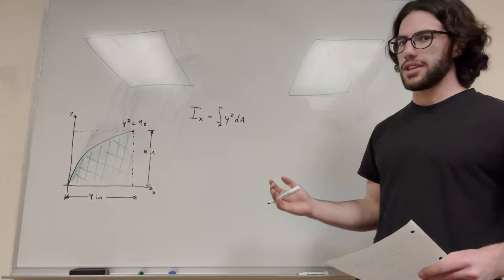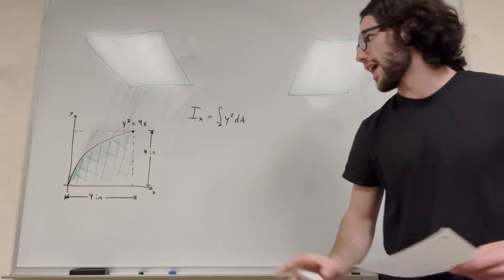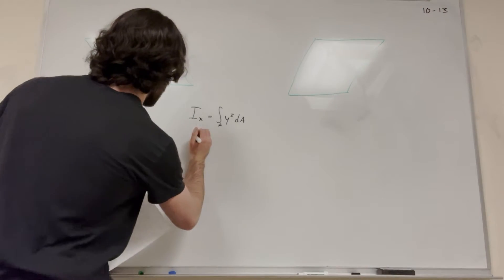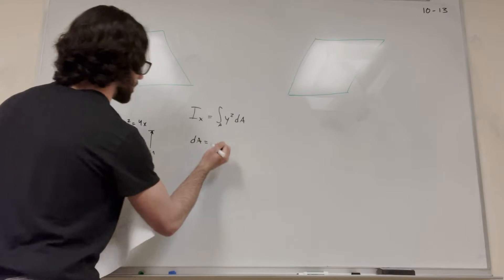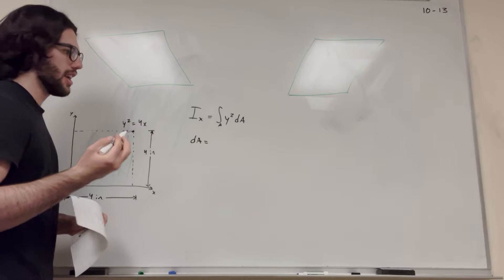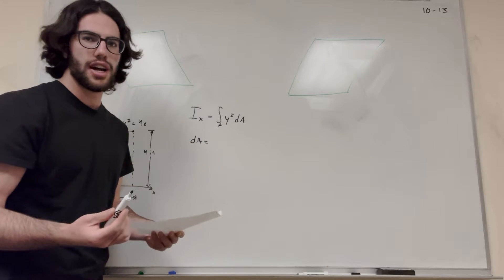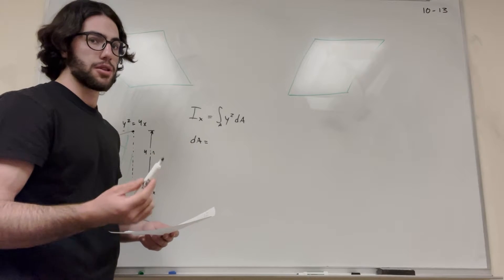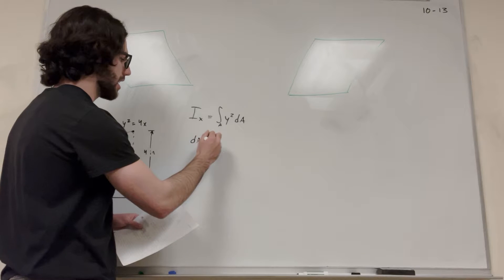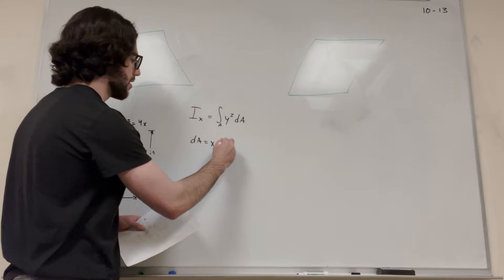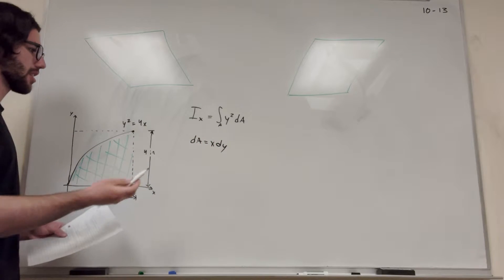We can't integrate with dA, we have to find dx or dy. So dA is either equal to xdy or ydx. In this case, we have y squared in the integral already, so it's going to be easier if we integrate with respect to y. So we're going to say dA equals xdy.